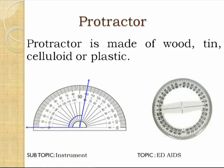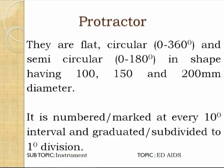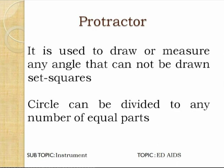A protractor is an instrument made up of wood, tin, celluloid, or plastic. It is flat and circular or semi-circular in shape, available in diameters of 100 mm, 150 mm, and 200 mm. It is marked at every 10-degree interval and graduated or subdivided into 1-degree divisions, so angles can be drawn and measured up to 1-degree precision. It is used to draw and measure any angle that cannot be drawn with a set square. With the help of a protractor, we can draw any angle in multiples of 1 degree, and a circle can be divided into any number of equal parts.